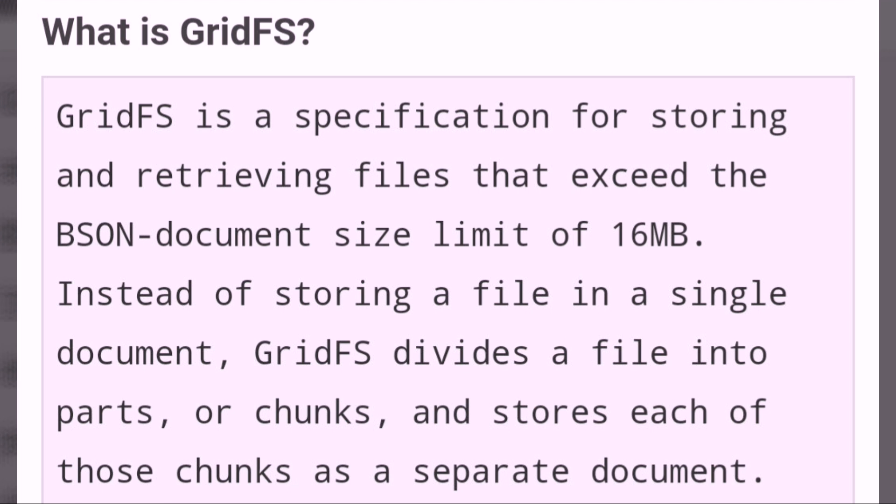What is GridFS? GridFS is a specification for storing and retrieving files that exceed the BSON document size limit of 16MB. Instead of storing a file in a single document, GridFS divides a file into parts or chunks and stores each of those chunks as a separate document.